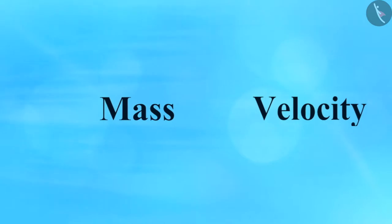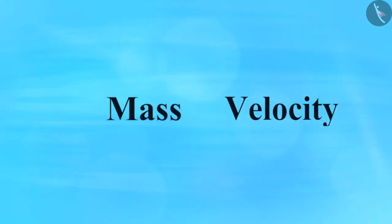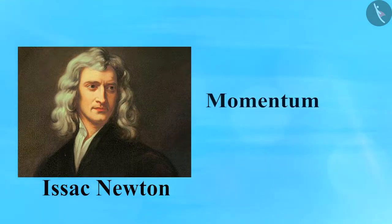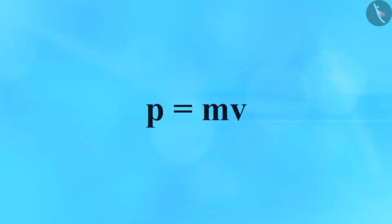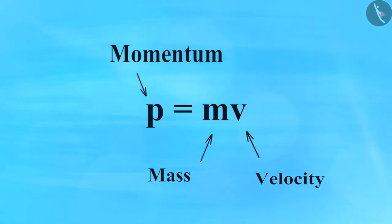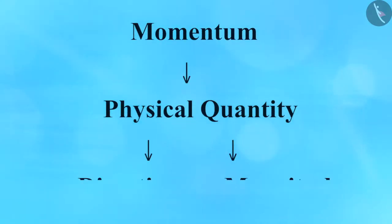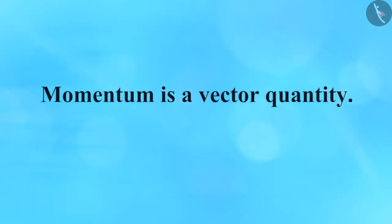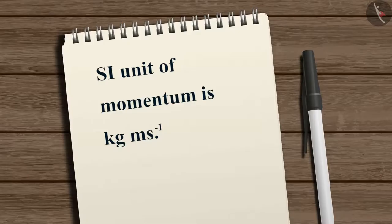This indicates there may exist a certain quantity that combines the mass and velocity of an object. Sir Isaac Newton introduced one such quantity called momentum. Mathematically, the momentum P of an object is defined as the product of its mass m and velocity v. Momentum is a physical quantity that has both direction and magnitude; the direction of momentum is the same as that of velocity. Momentum is a vector quantity, and its SI unit is kilogram meter per second.